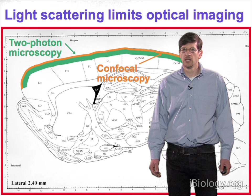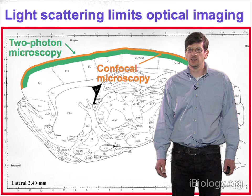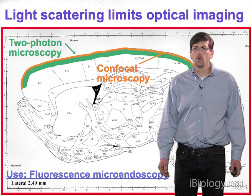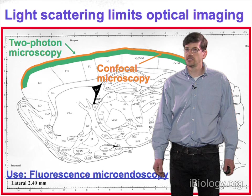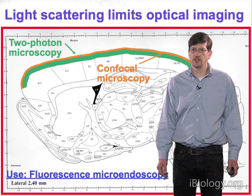The question thus is how do we inspect cells in deeper lying areas relevant to many brain diseases — such as the hippocampus, the basal ganglia, and many other areas. Over the last few years, my group has developed techniques we call microendoscopy. The microendoscopy methods make use of fluorescence contrast modalities as well as other modalities such as second harmonic generation.